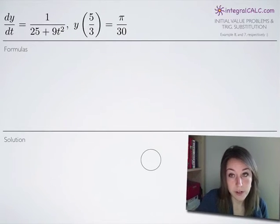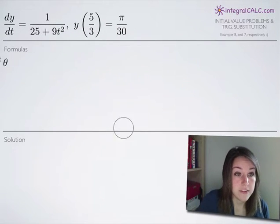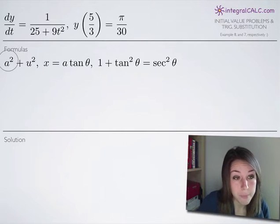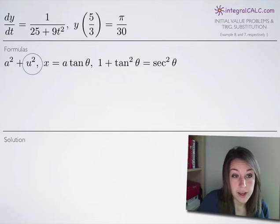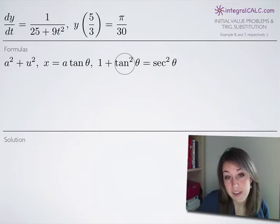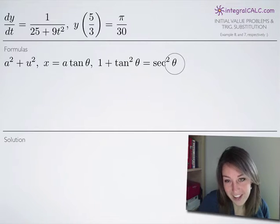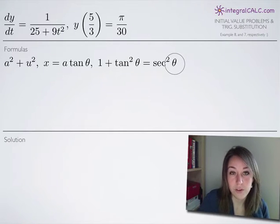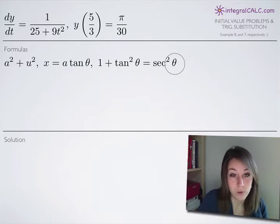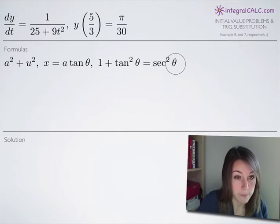The first thing we're going to do is lay out a bunch of formulas. Because this is a trigonometric substitution problem, we have the identity a² + u², where x equals a·tan(θ), and the identity 1 + tan²(θ) equals sec²(θ). If you're unfamiliar with either concept, you can look at those sections on my website for more information and examples.